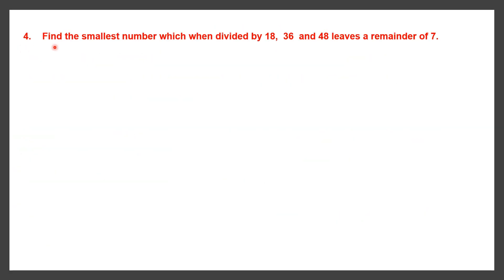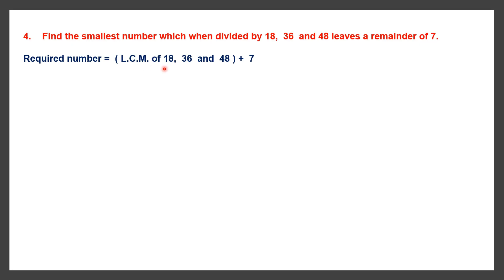Question 4. Find the smallest number which when divided by 18, 36 and 48 leaves a remainder of 7. Whenever we are asked to find the smallest number like this, we have to find the LCM. Now it says this number leaves a remainder of 7, meaning this number is 7 more than the LCM. So we find the LCM and add 7 to it. Required number = LCM of these three numbers plus 7.